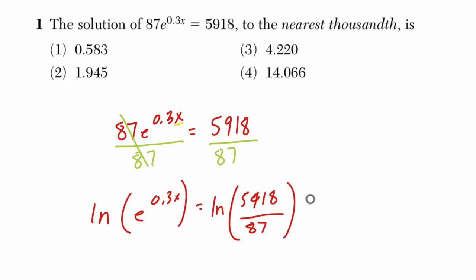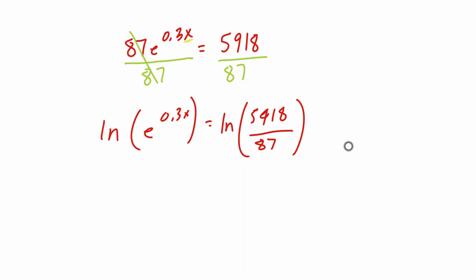On this side now, what we can do is say our log law, essentially c times the log base a of a, tells me that this exponent can come down in front. So it's going to be 0.3x times the natural log of e, and that should equal the natural log of 5918 minus the natural log of 87.